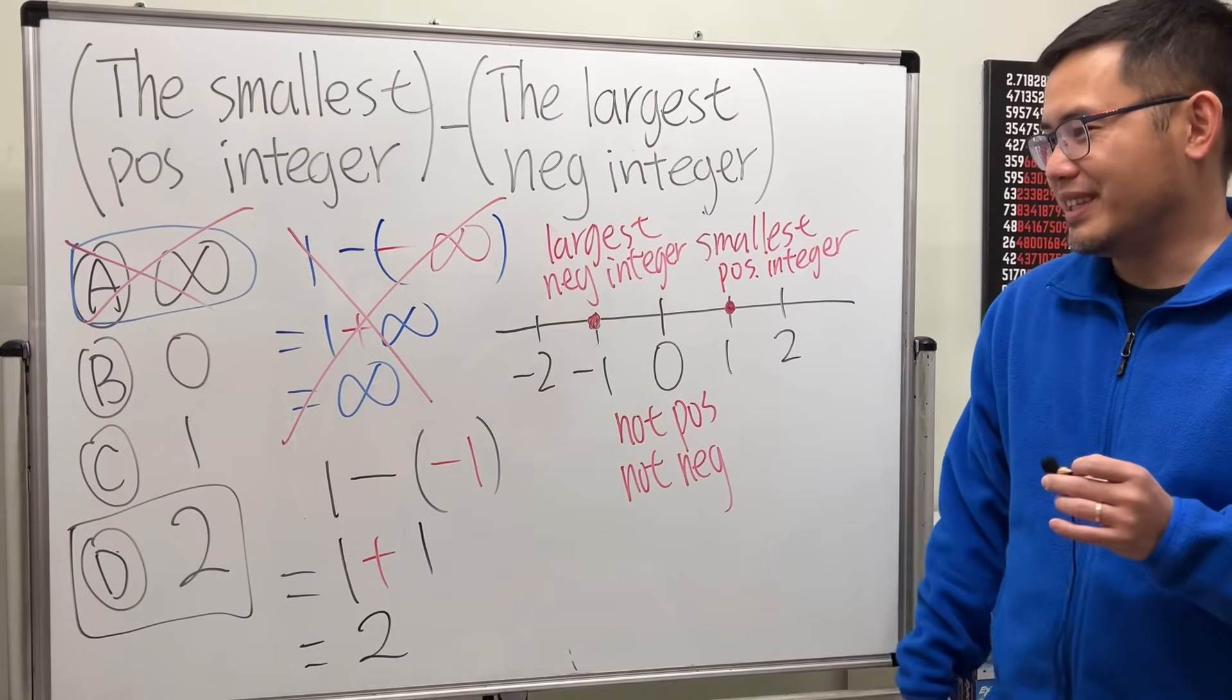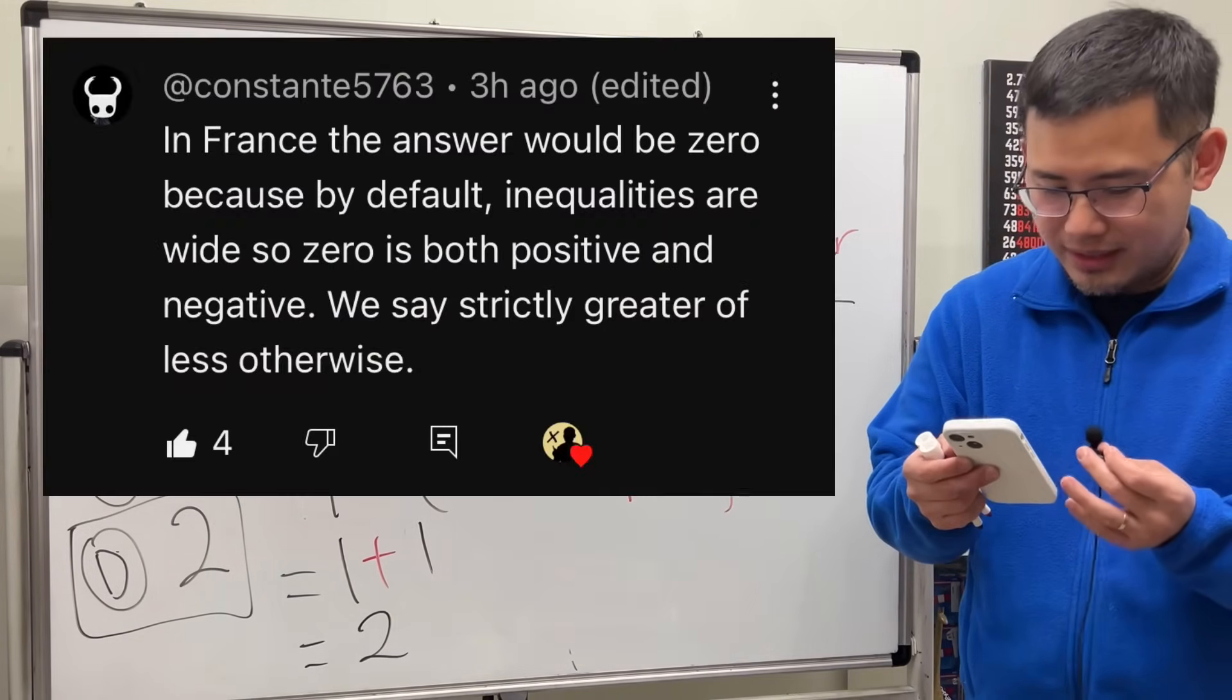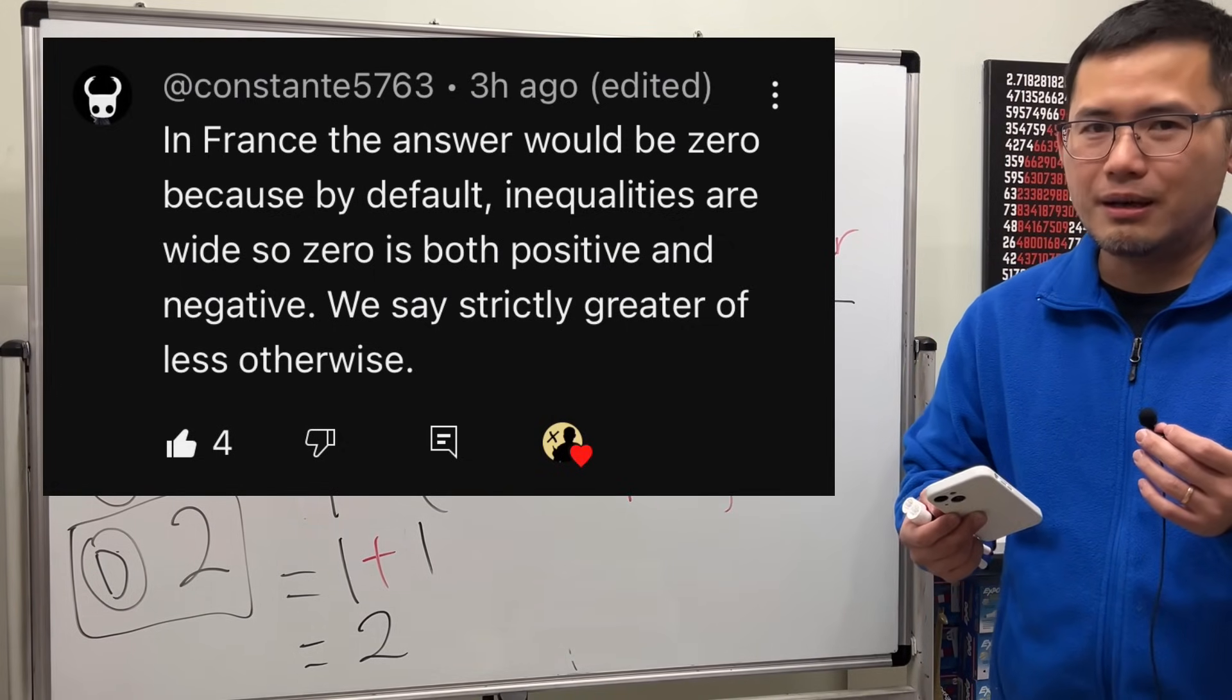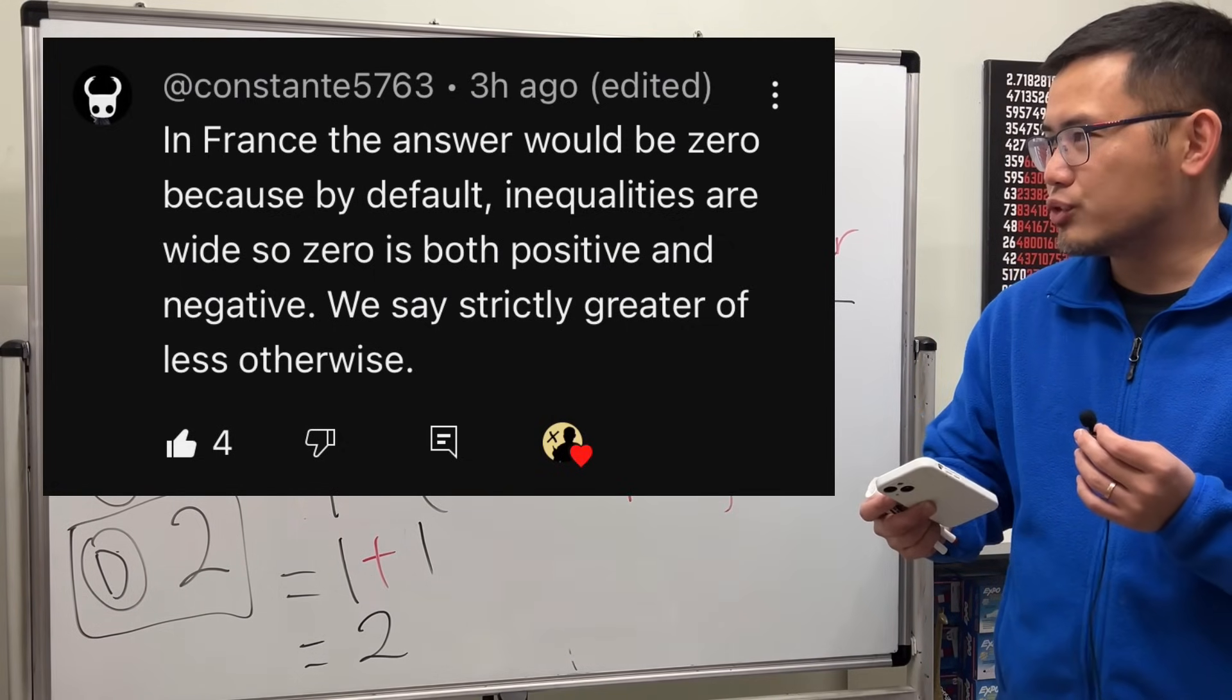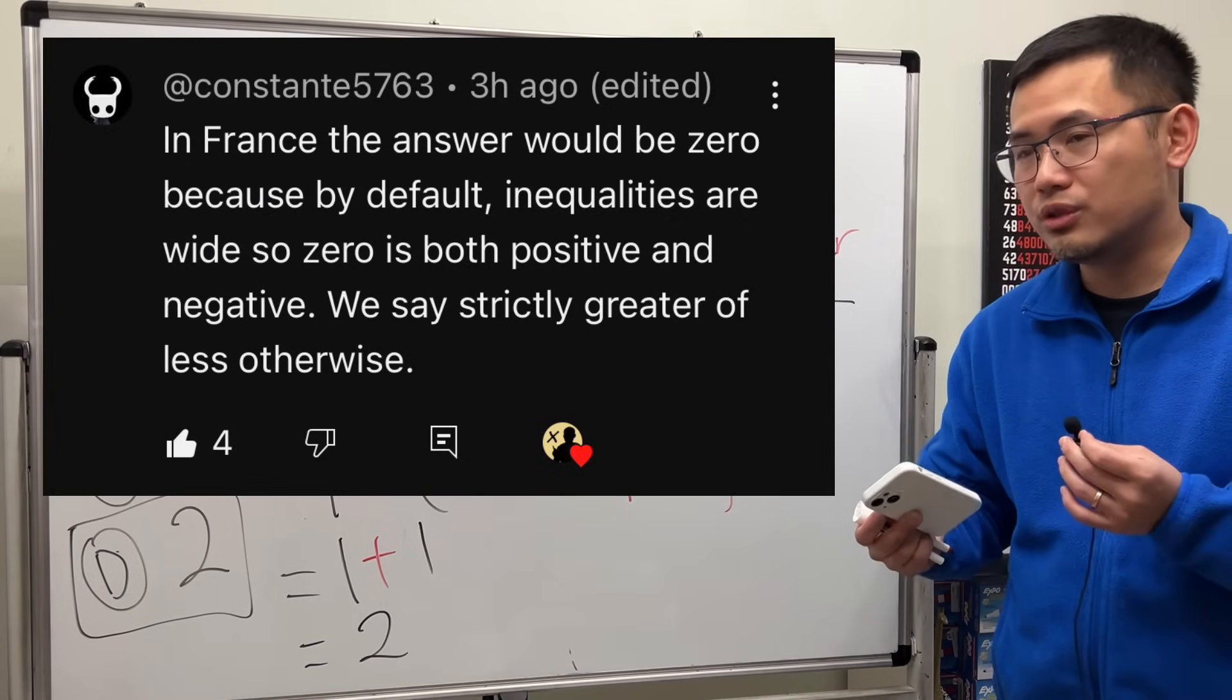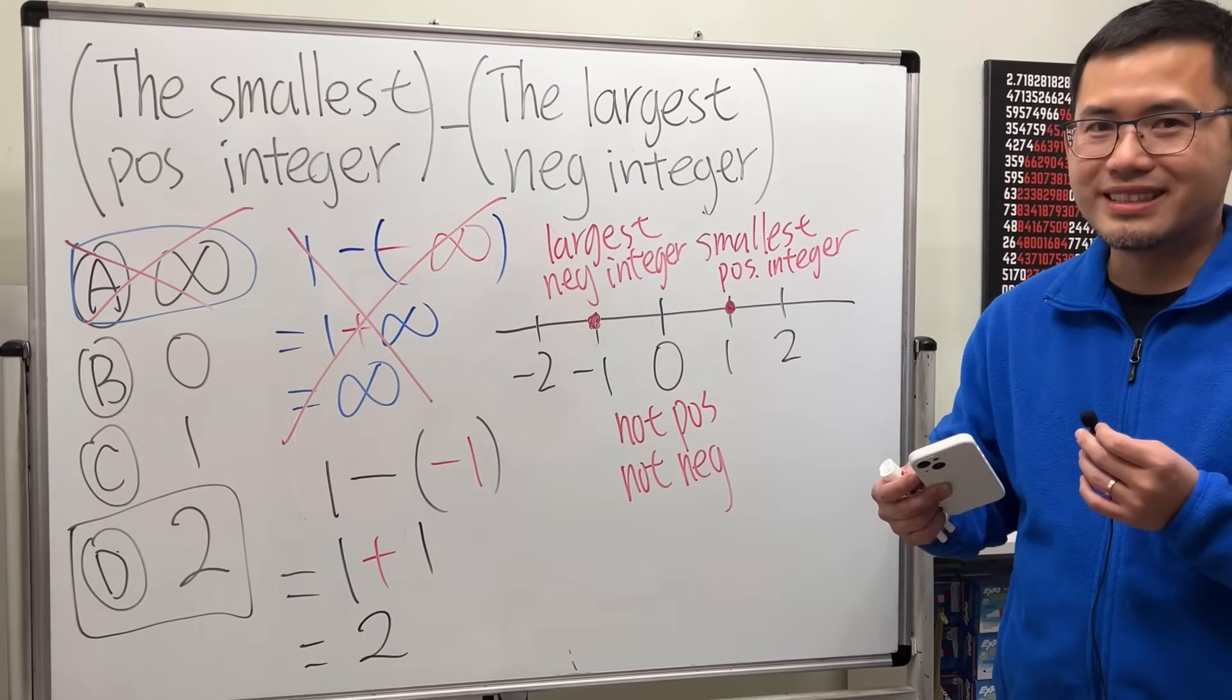That's pretty much the intended solution. However, as I read a comment right here, it says that in France it seems like zero is both negative and positive. So I'm not sure about that. I think it's just depending on how you defined it or the language issue. Yeah, what do you guys think?